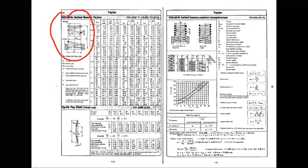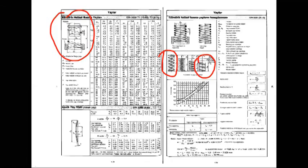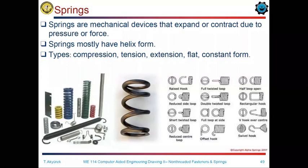L0 is the free length, which is the unloaded length of the spring, and Lv is the blocked length of the spring. The ends of the springs vary according to their application. For hook-ended springs, they are mostly used for tensioning purposes. Compression springs are commonly encountered as machine elements in order to reduce vibration.